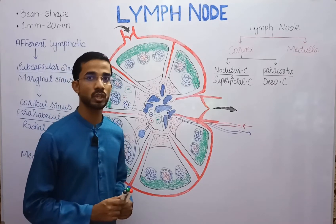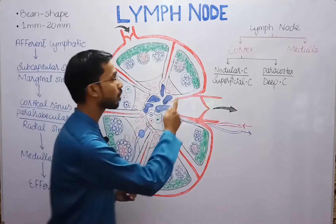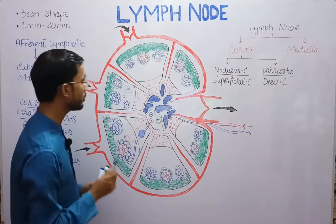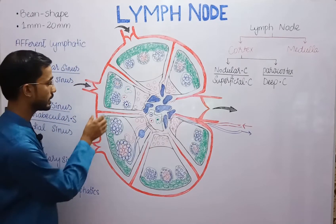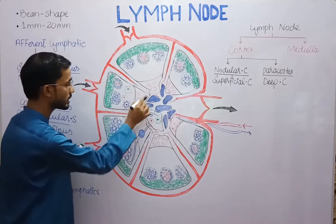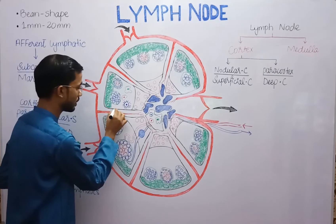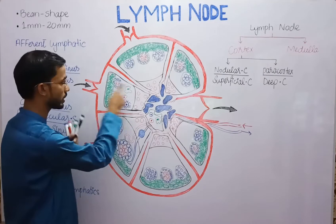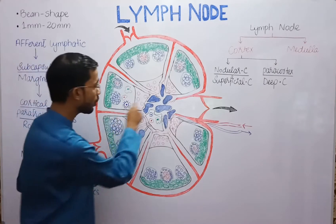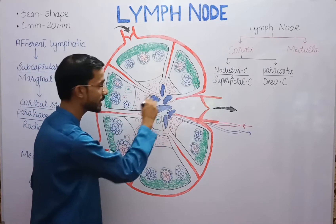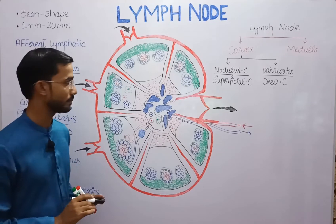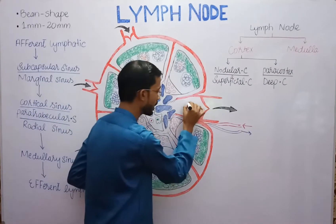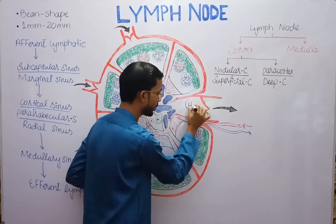A lymph node has two major components: cortex and medulla. The cortex region is shown on the outer portion, below which the central area is the medulla, and after that there is a hilum region.